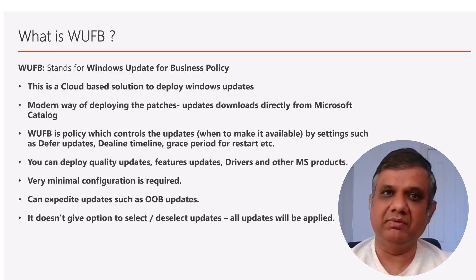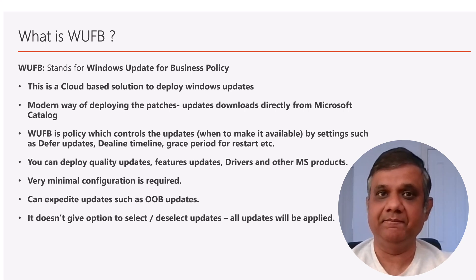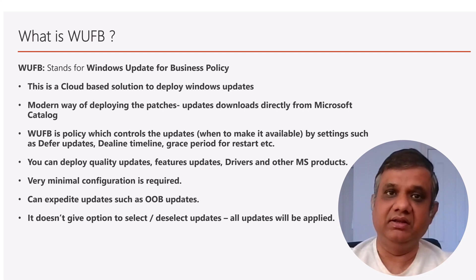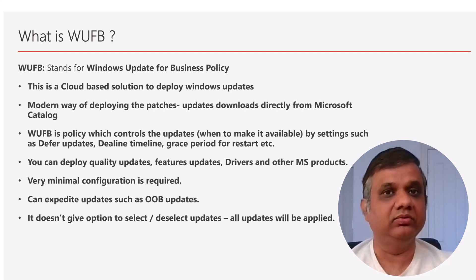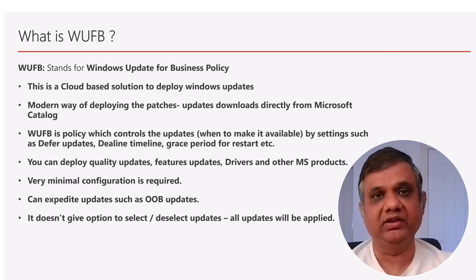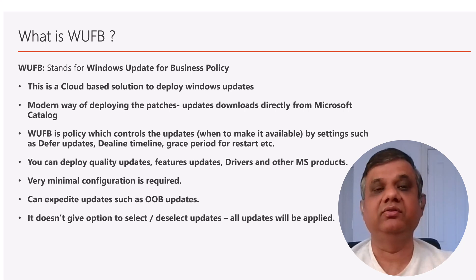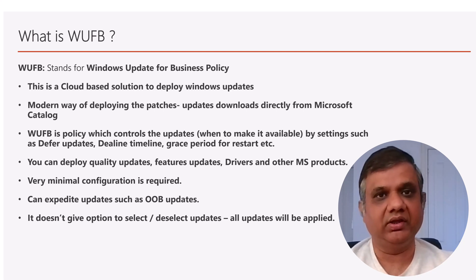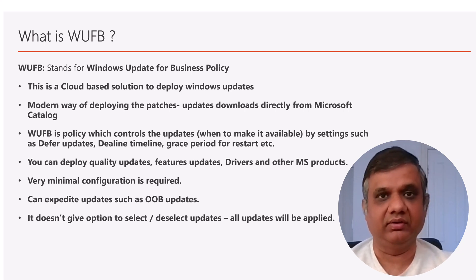Windows Update for Business requires very minimal administration effort. You can also push out-of-band updates and expedite updates. One important thing to note is that Windows Update for Business policies don't allow you to select specific updates — once the policy is configured, the device will receive all updates. You don't have the option to pick one specific cumulative update or .NET framework update individually.